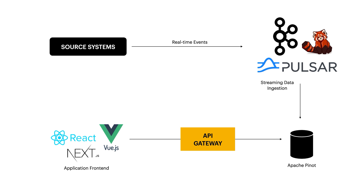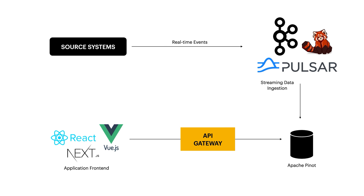Soon after Pinot starts consuming from that topic, it converts the data into columnar format, stores it in segments, and makes it available for query. Once the table data is ingested into Pinot, you can expose it to the front-end through the API gateway. The first option is through Pinot's REST APIs, which you can call directly from a single page application. The second option is through its Python API interface — Pinot provides a PinotDB Python driver, so if you build a Python dashboard like Streamlit, you can directly invoke Pinot through that driver. There are also other options like JDBC for Java-based front-ends.